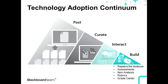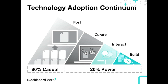Finally, albeit a small group, there are faculty who are building their own materials and entire courses. The builders are a small minority today but have a loud voice — typically the professor closest to the instructional technology team on campus. As more faculty move up this progression, more will move into the building phase, though we don't expect this to be a majority anytime soon because it is very labor-intensive. About 80% are in the post phase and are considered casual users, whereas 20% across the curate, interact, and build phases are considered power users.